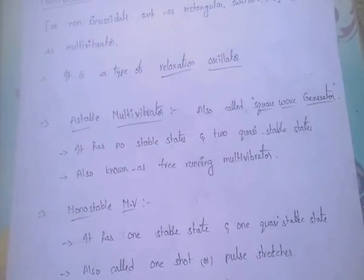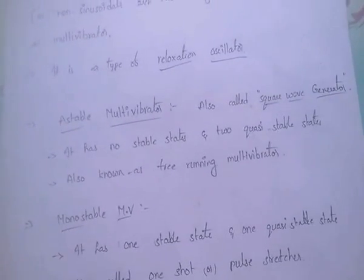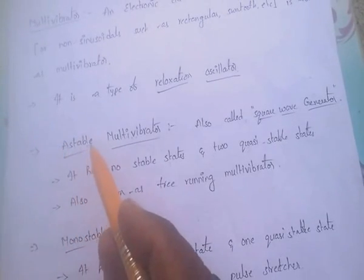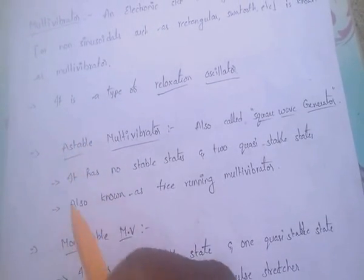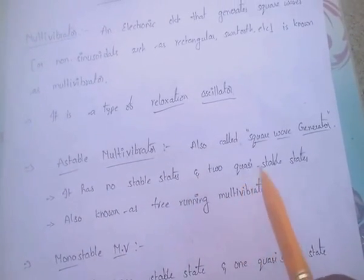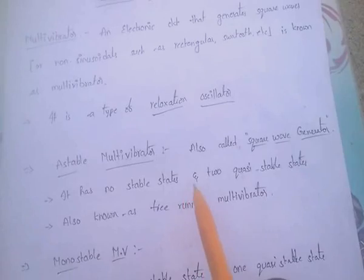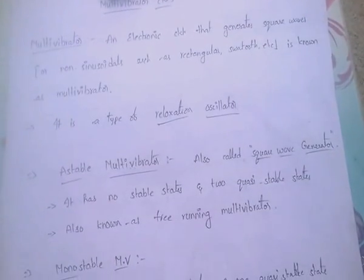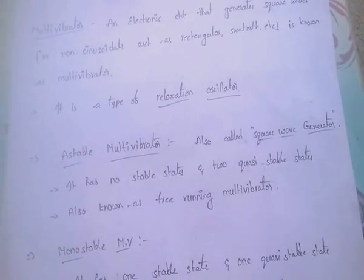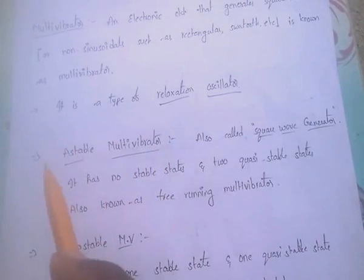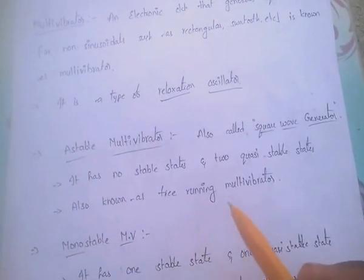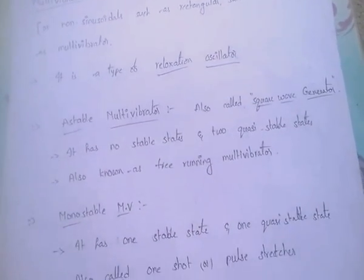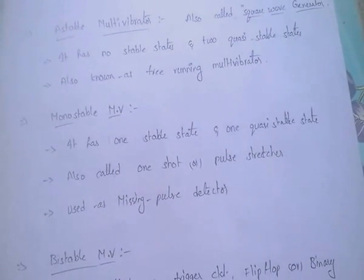Astable multivibrator: as the name implies, 'astable' means it has no stable states. It has two quasi-stable states and is also called a square wave generator. It is also known as a free-running multivibrator.